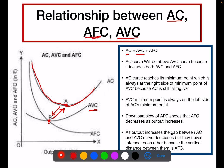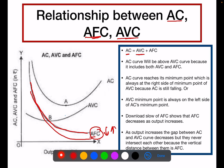You can also write it the other way: the AVC's minimum point is always on the left-hand side of the average cost curve. The next point is the downward slope of AFC, which indicates that AFC decreases as output increases. This curve is basically known as a rectangular hyperbola.